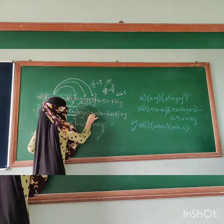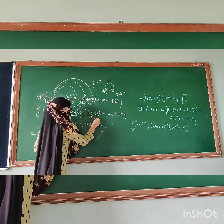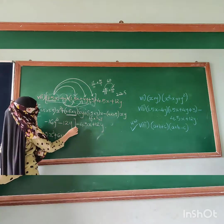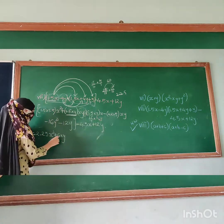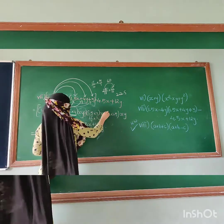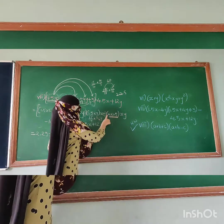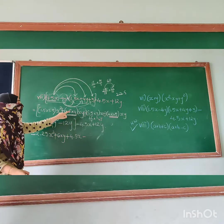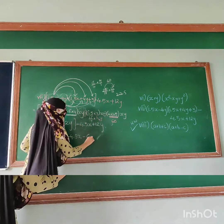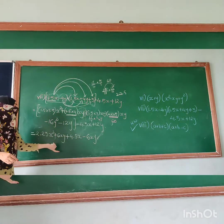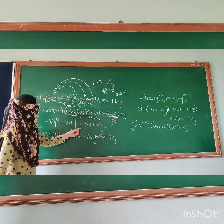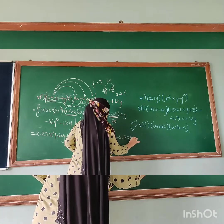Now for the minus sign: minus 4 into 1.5 gives minus 6xy. And minus 4 into 4 gives minus 16y squared. Minus 4 into 3 gives minus 12y. And the outside terms are as they are: minus 4.5x plus 12y.